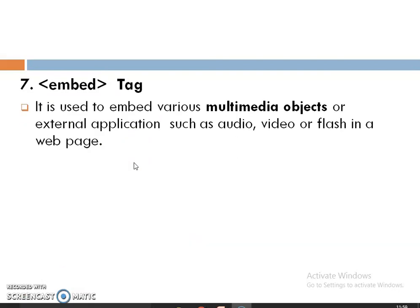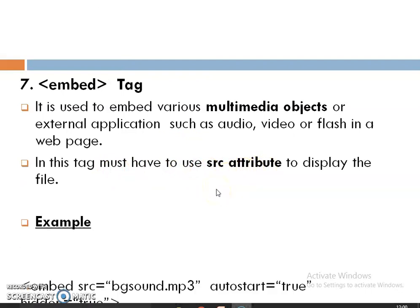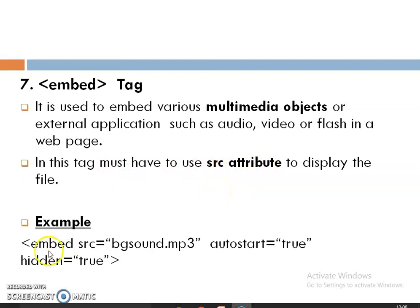The Embed tag is used to embed multimedia files — in terms of audio, video, or flash files — in a web page. Compulsorily, we have to use the source attribute to pass the source of the file. For example, using the embed tag, we pass the source of the file along with attributes like autostart and hidden.